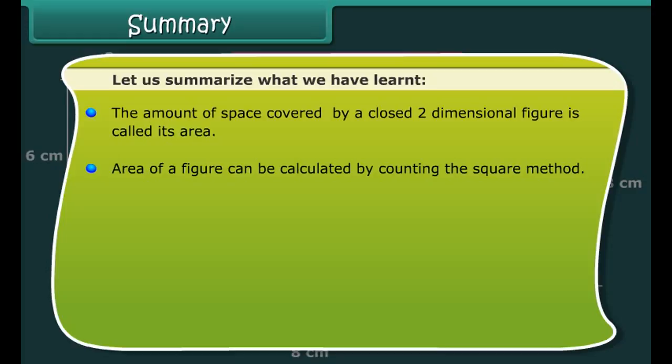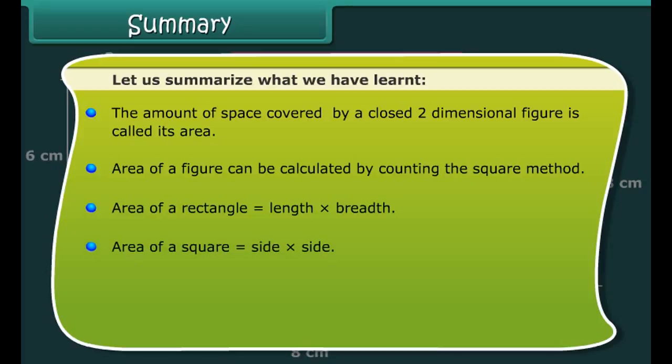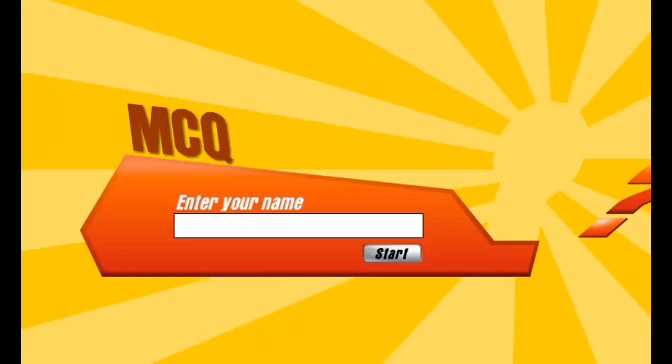Area of rectangle A is 18 square centimeters. Areas of rectangle B and C are the same, that is 20 square centimeters each. Thus, the area of the composite figure is 18 plus 20 plus 20, which is equal to 58 square centimeters.